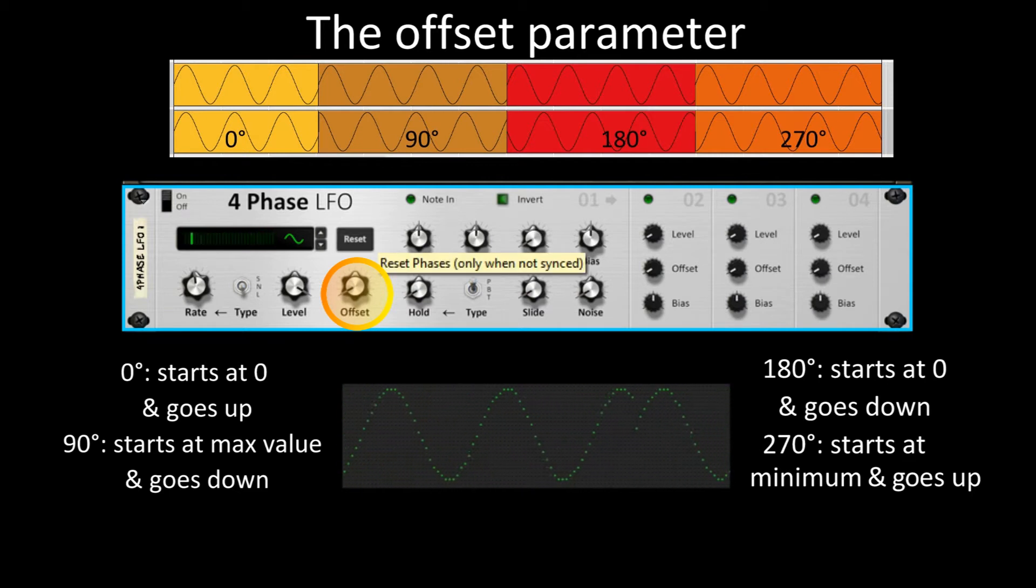This very useful function provides a way of choosing where exactly the oscillator cycle should start and in what direction it should go. This parameter is also available for each of the three other copies of the main LFO.